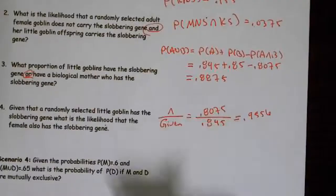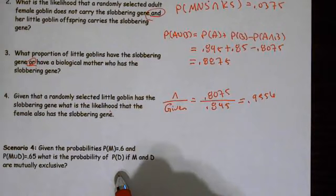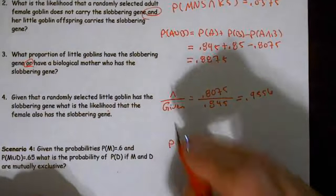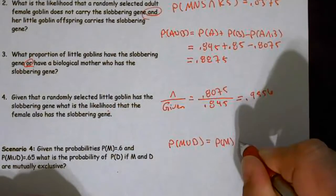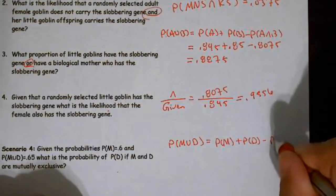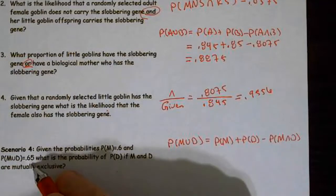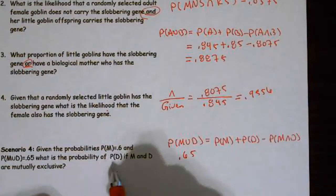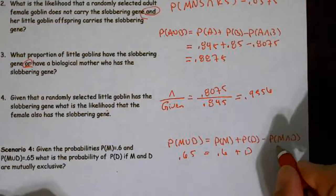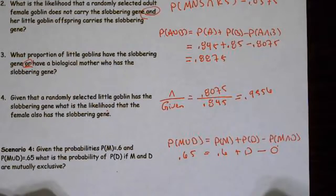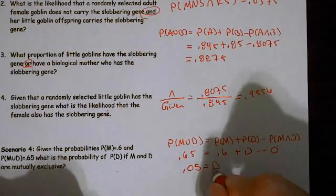Given that P(M) = 0.6 and P(M∪D) = 0.65, what's the probability of D if M and D are mutually exclusive? Using the general addition rule: P(M∪D) = P(M) + P(D) − P(M∩D). If they're mutually exclusive, there's no overlap, so P(M∩D) = 0. Plugging in: 0.65 = 0.6 + P(D), so D = 0.05.